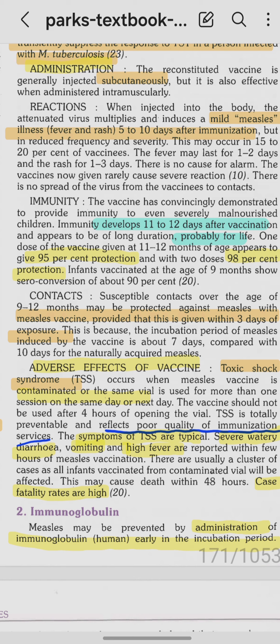One dose of vaccine at 11 to 12 months gives 95% protection; two doses provide 98% protection. For contacts over the age of 9 to 12 months, the measles vaccine should be given within three days of exposure, because the vaccine-induced incubation period is about seven days compared to 10 days for natural measles.